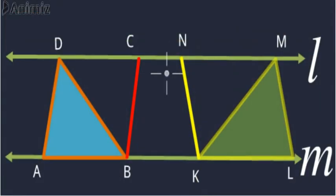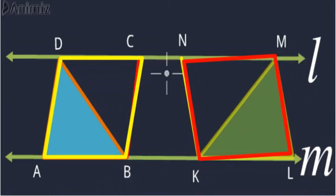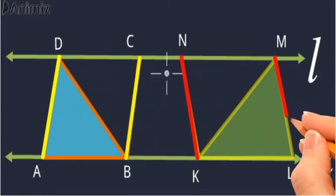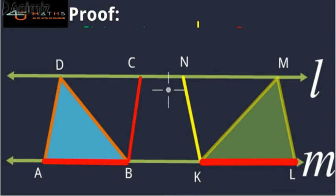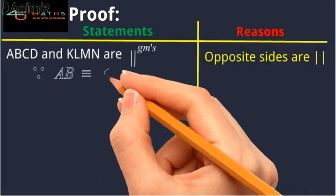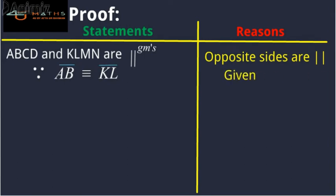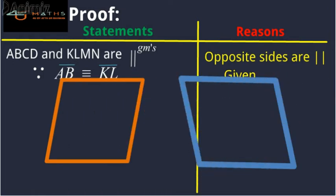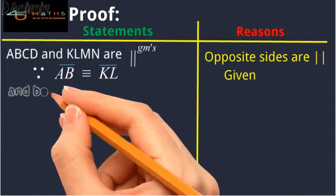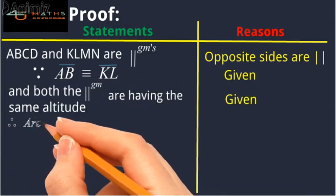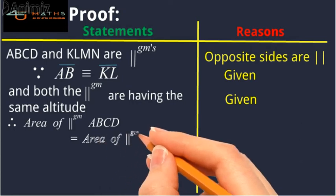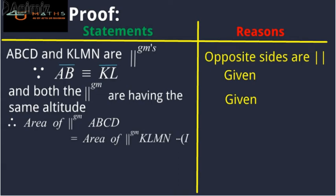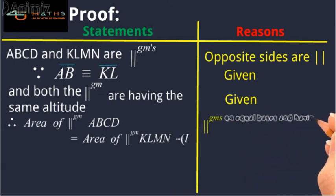From the figure, ABCD and KLMN are parallelograms because their opposite sides are parallel, as mentioned in the construction. Also, AB is congruent to KL, as given. Since both parallelograms have the same altitude, we conclude that the area of parallelogram ABCD is equal to the area of parallelogram KLMN. The reason is: parallelograms on equal bases and having the same altitude are equal in area.